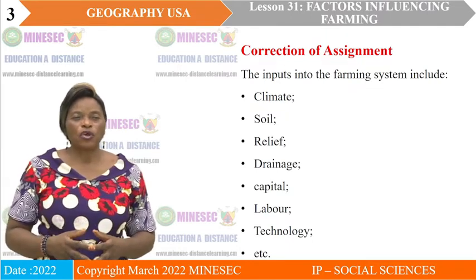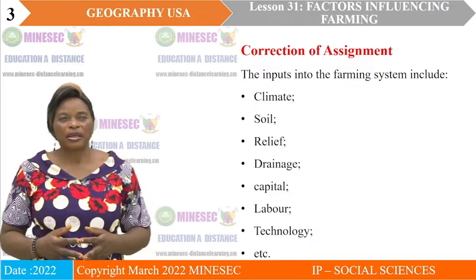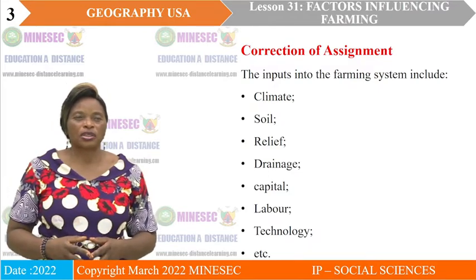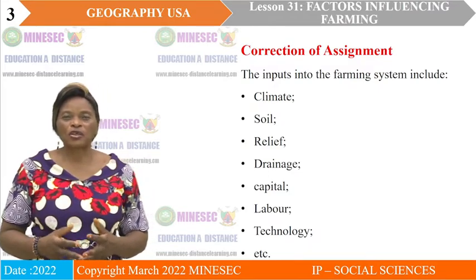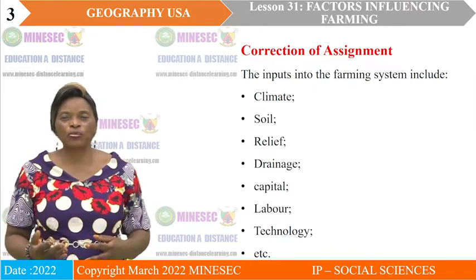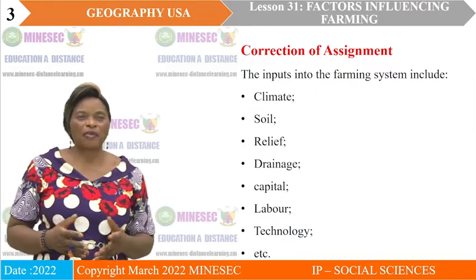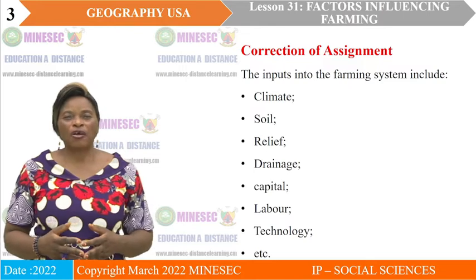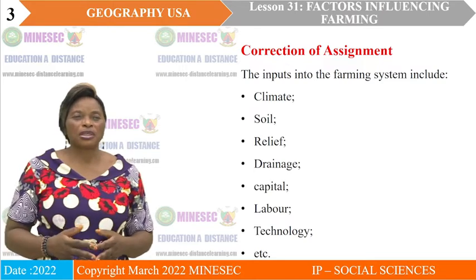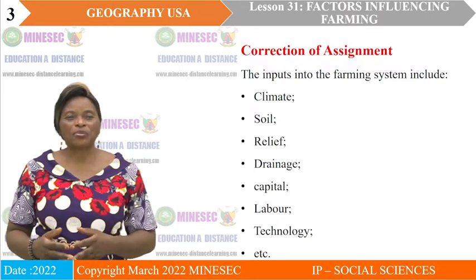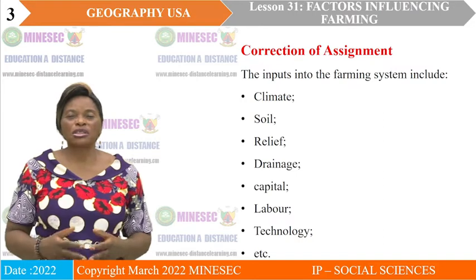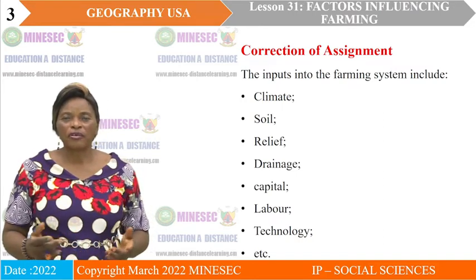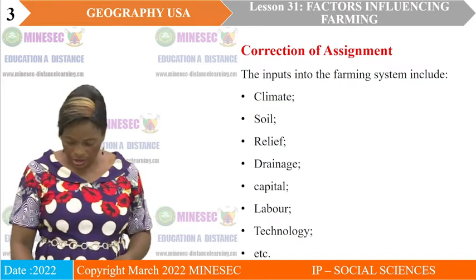We are going to give some examples here. The factors are not arranged under physical or human, but we have climate, soil, relief, and drainage, which are under physical inputs. Then we have capital, labor, technology, and many others that are under the human inputs.